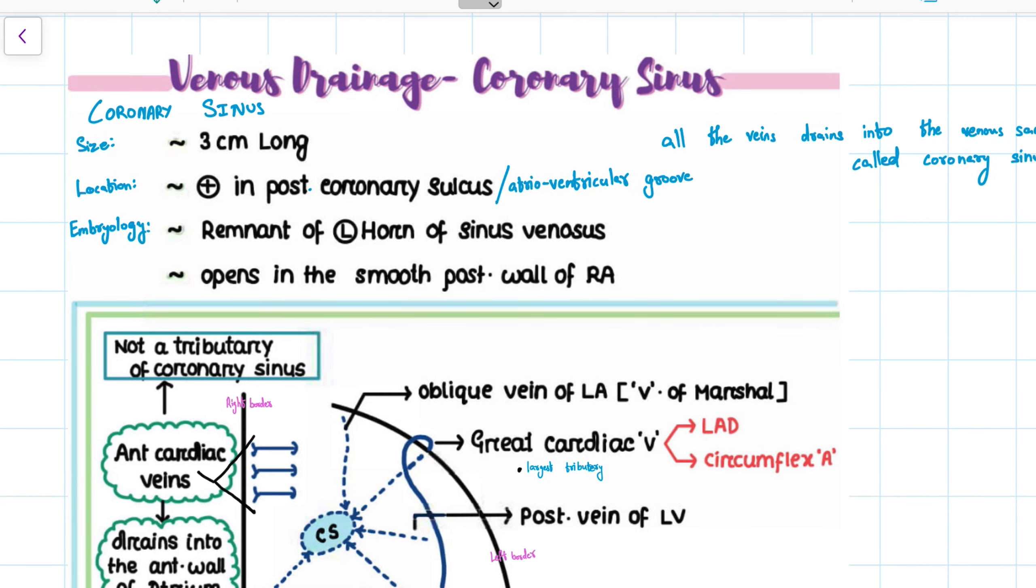Firstly, the size of the coronary sinus. It is approximately 3 cm long and is located in the posterior coronary sulcus. The posterior coronary sulcus is otherwise known as the atrioventricular groove.